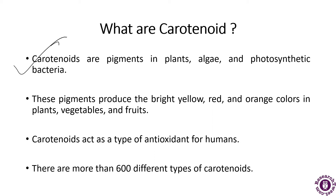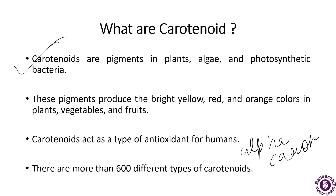These pigments produce the bright yellow, red, and orange colors in plants, vegetables, and fruits, and they act as a type of antioxidant for humans. There are more than 600 types of carotenoids, and some can be converted into vitamin A when released into the body. A few of the carotenoids include alpha-carotene, beta-carotene, lutein, and lycopene.